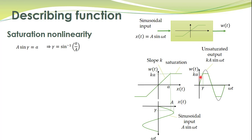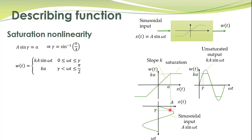We can now write a mathematical expression for W(t). As long as ωt is between 0 and γ, W(t) is simply a scaled version of the input: k·A·sin(ωt). And when the input exceeds this value, then it is saturated — saturated at a value equal to kA, for ωt between γ and π/2.